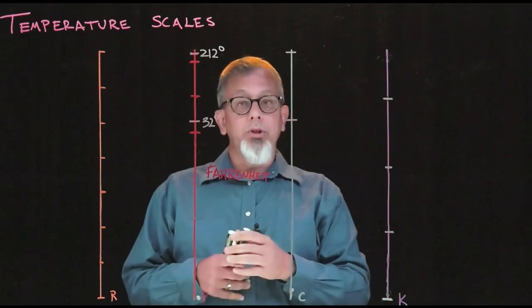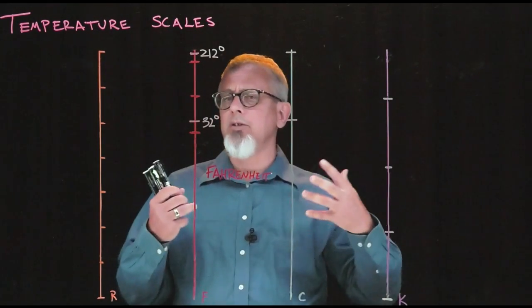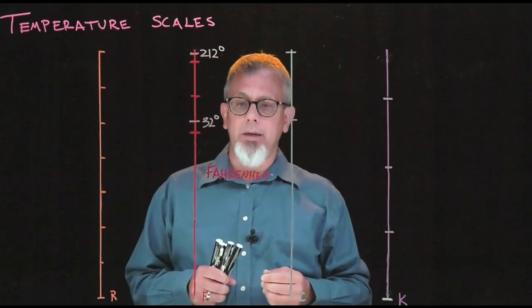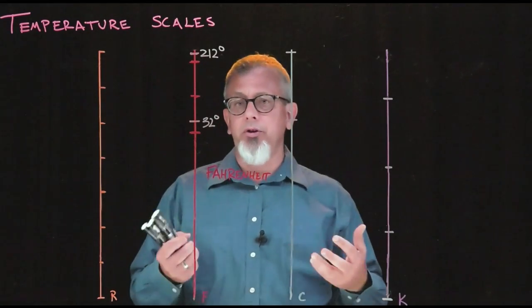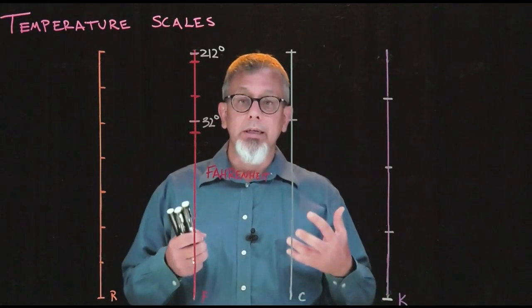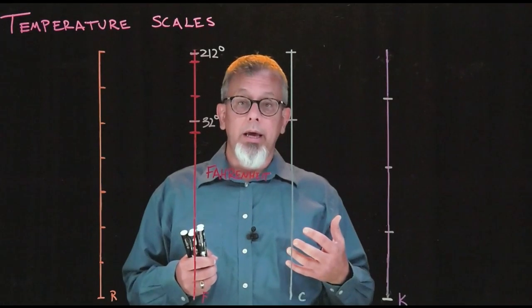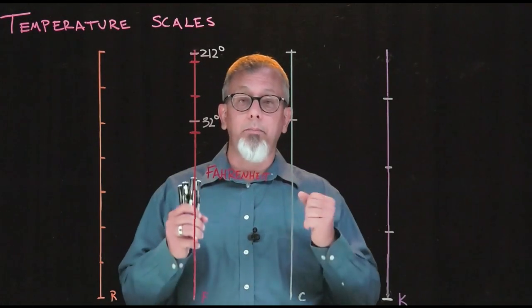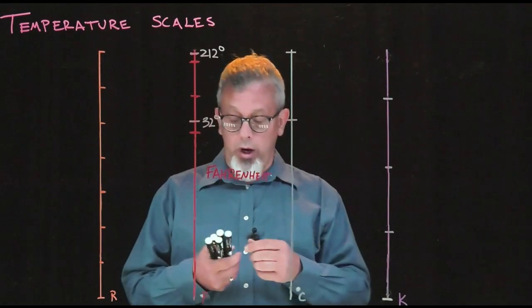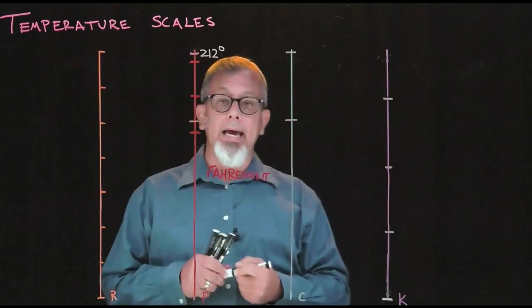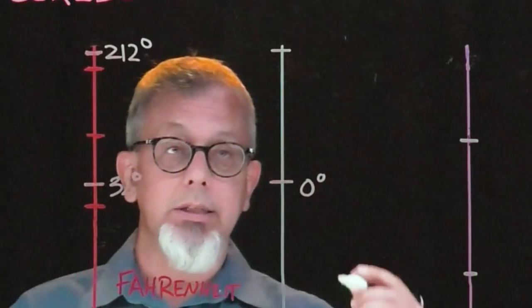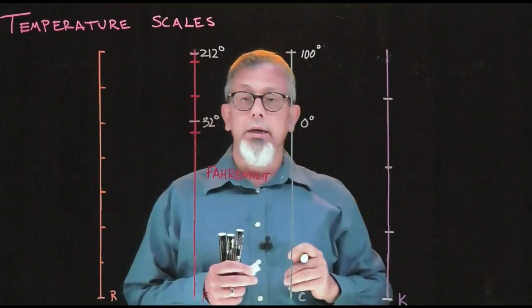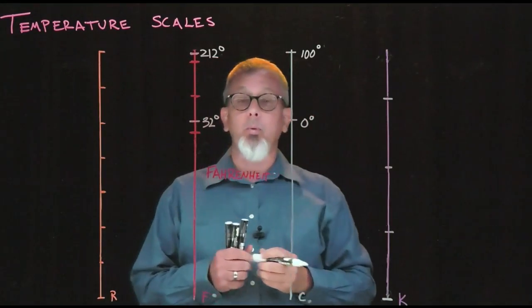This scale was created before we knew as much detail as we know now about temperatures. Eventually people looked at this scale and said, well the scale's a little strange, numbers like 212 and 32, why should we have to remember those scales? Let's create a new scale that uses the same points, the freezing and boiling points of water, but we're going to create a scale where 0 degrees is the point at which water freezes, and 100 degrees is the point at which water boils.